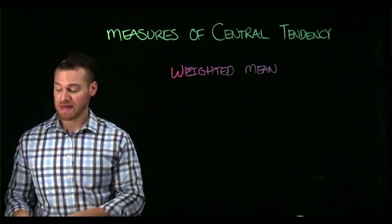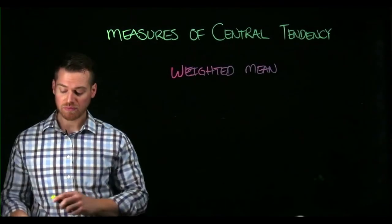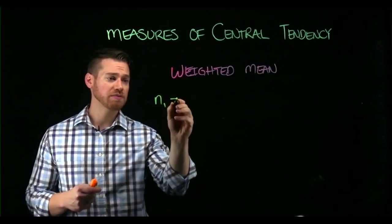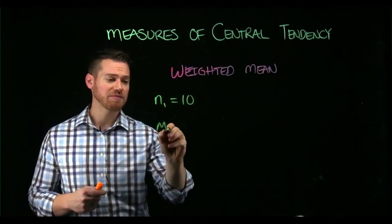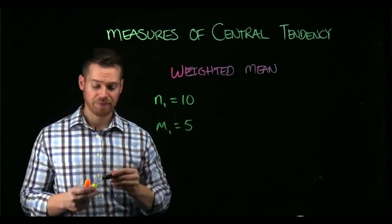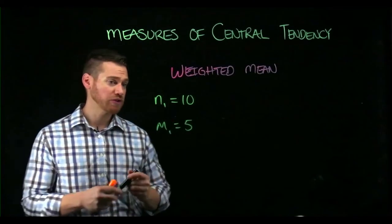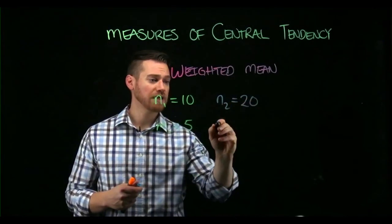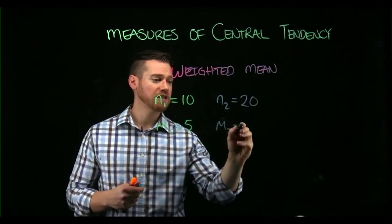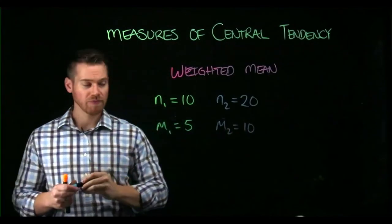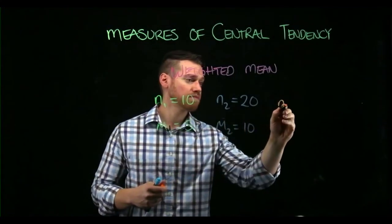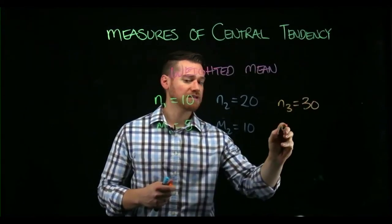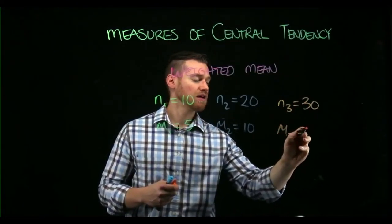So for example, imagine I have three samples with different means. Sample one is size 10 and sample one has a mean of 5. Sample two is size 20 and sample two has a mean of 10. And sample three is 30 and has a mean of 15.